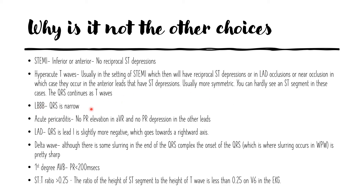It is not left bundle branch block because the QRS duration is less than 120 milliseconds in this EKG. It is not acute pericarditis because in pericarditis the diffuse ST elevations are accompanied by PR depression in all leads except AVR, where you can see a PR elevation — and you don't see that here.